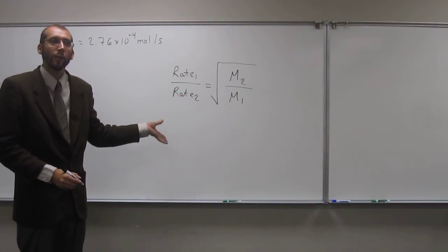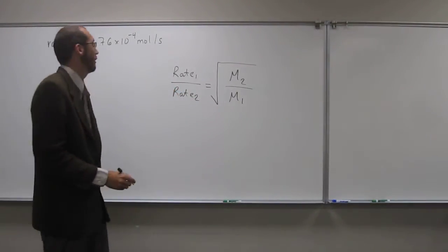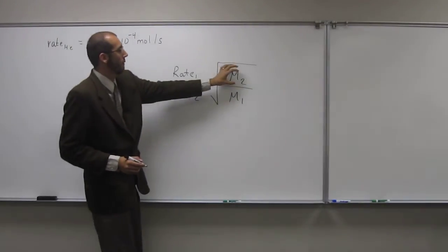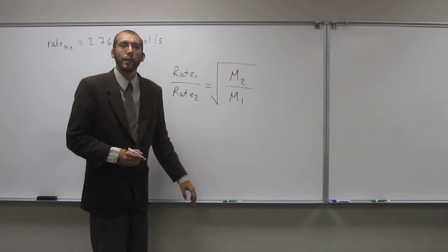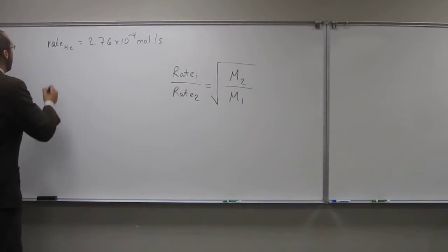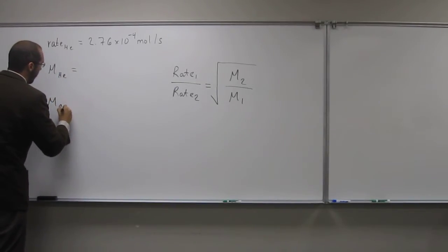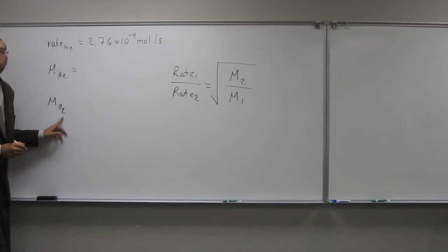If you don't remember that equation, you can't do these problems, unfortunately. So, what does that mean? Well, that means we need to figure out what the molar mass of these things is. The molar mass of helium and the molar mass of oxygen. So, oxygen we have to remember is the diatomic molecule.